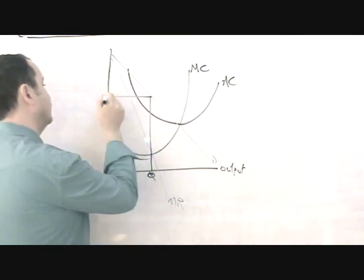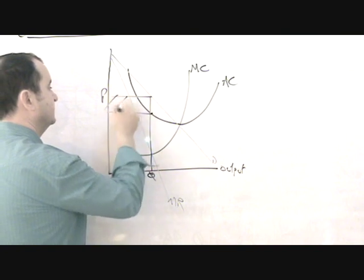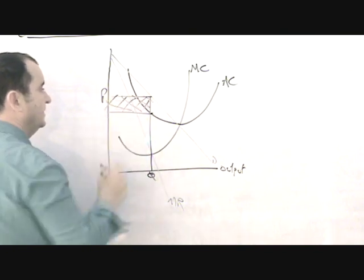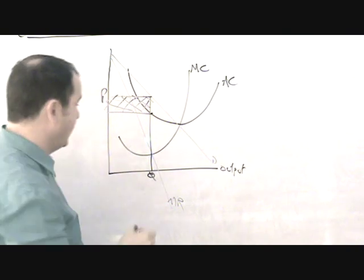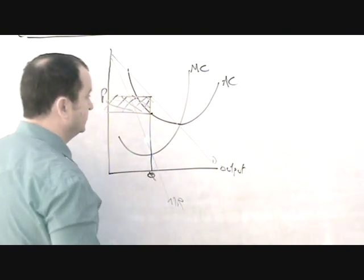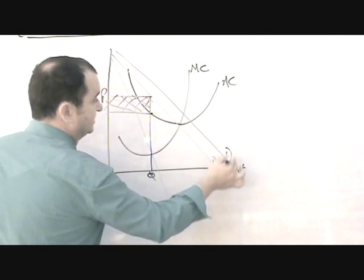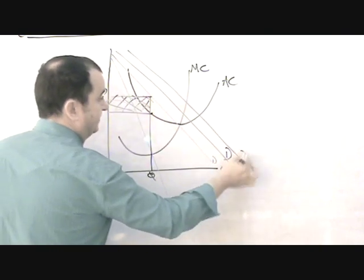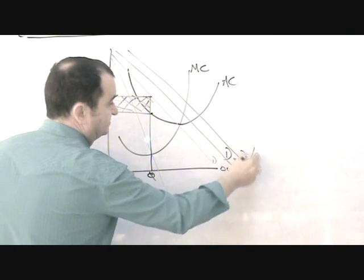It will be charging the price of P. There's their average cost and there's their profit area. Now, in the short run, a firm can add more of the variable factor of production and hope to increase the quantity. After all, if demand increases, this is also the average revenue curve.